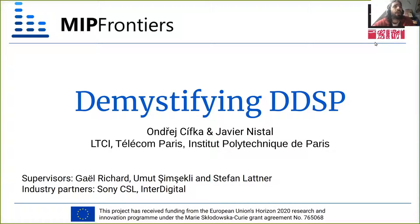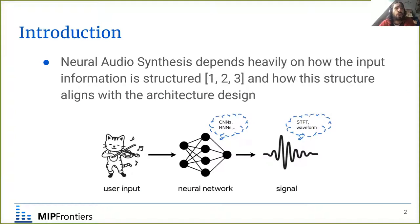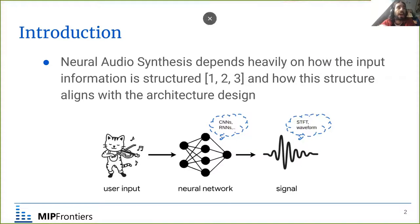DDSP is a library for differentiable signal processing for audio synthesis with neural networks, recently published by Google, that has drawn a lot of attention. One of the main challenges in audio synthesis with neural networks is finding the appropriate representations to fit to our network. The interplay between how we structure audio information and how this aligns with architecture building blocks is key for efficient learning.